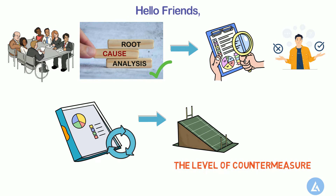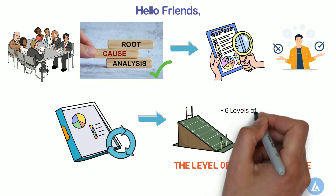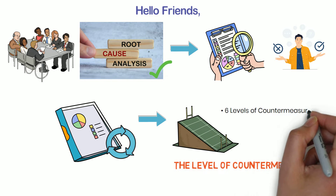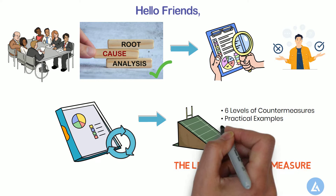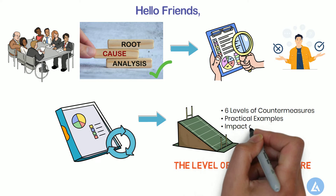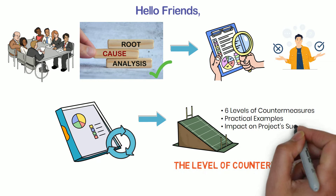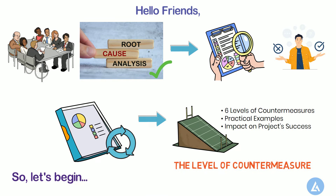Now the question is: how to address or overcome this situation? In this video, I will explain all six levels of countermeasures with the help of practical examples, and what is the impact of each level of countermeasure on your project success. So let's begin.